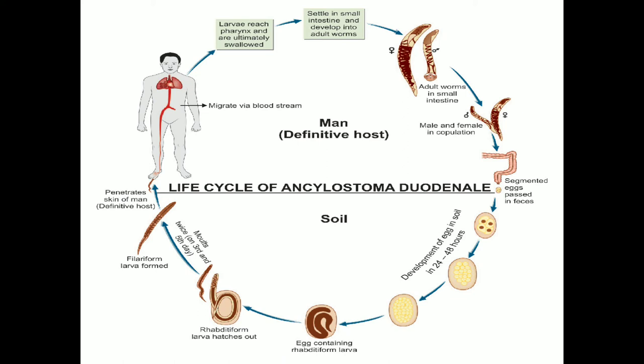Adult worms inhabiting the small intestine attach themselves to the mucous membrane via their mouth parts, and the female worm lays eggs. Eggs containing segmented ova with four blastomeres are passed out in the feces of infected persons; freshly passed eggs are not infective. When deposited in soil, the embryo develops optimally in sandy loamy soil with decaying vegetation under a moist, warm, shady environment. In about two days, a rhabditiform larva measuring 250 micrometers in length hatches from the egg and feeds on bacteria and organic matter in the soil.